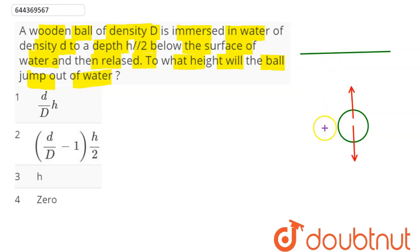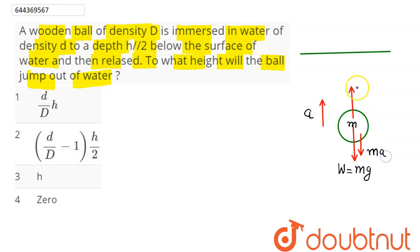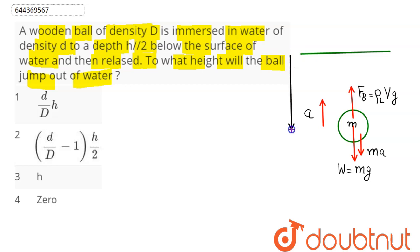It will jump out of the water, meaning acceleration will be in the upward direction and pseudo force will be in the downward direction. The acceleration is upward. Mass is M. Weight equals Mg, pseudo force Ma acts downward, and buoyancy force acts upward given by: density of liquid × volume submerged × g. Since it is completely submerged, volume equals V. The depth is given as h/2, and initial velocity is 0.